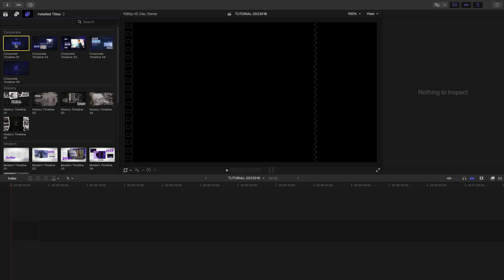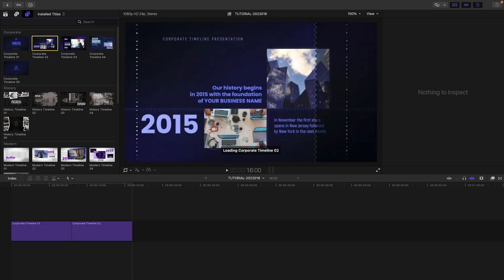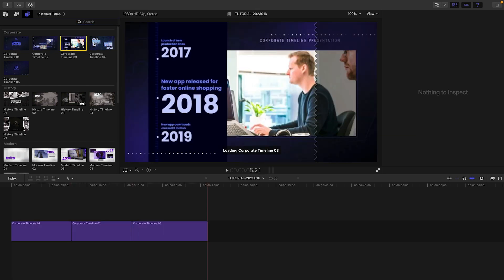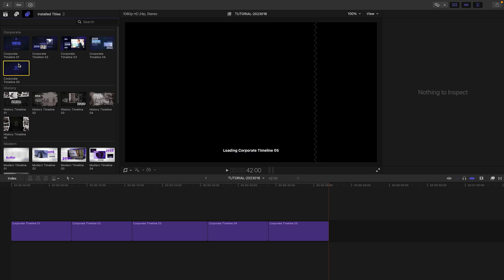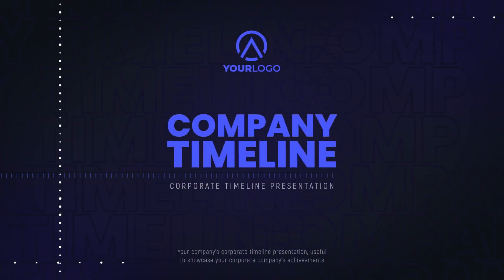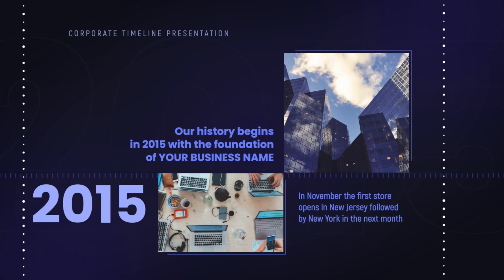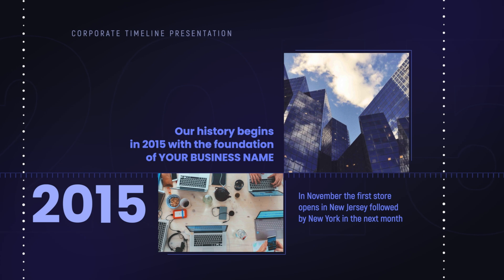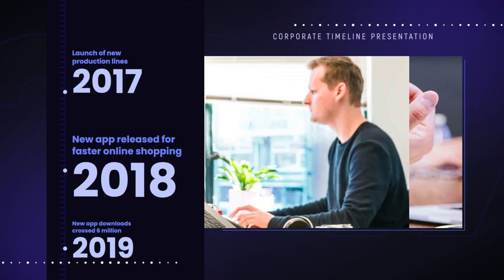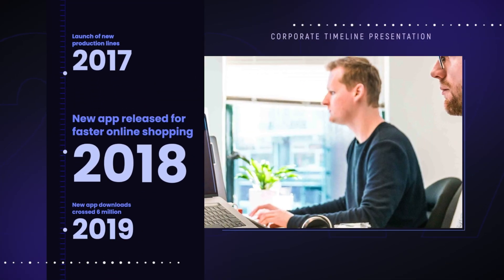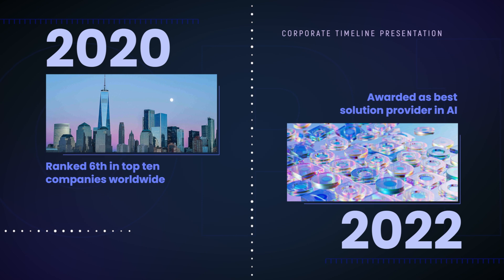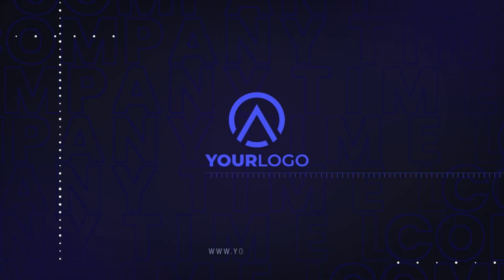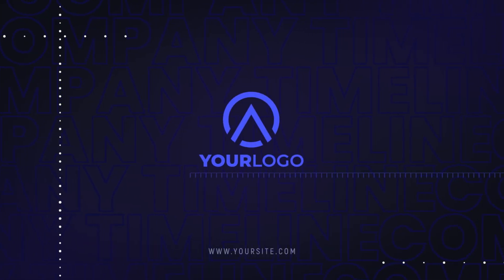I'll go ahead and attach the five presets to my timeline. The five presets follow a logical pattern – an intro, a 1-up or founding screen, an animated timeline with scrolling text, a 2-up showing two events, and a final landing screen.